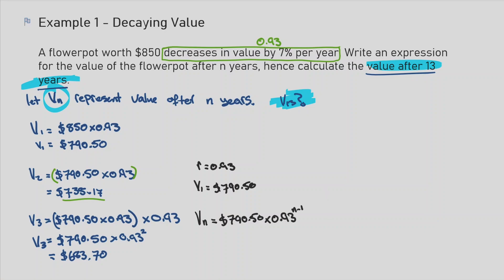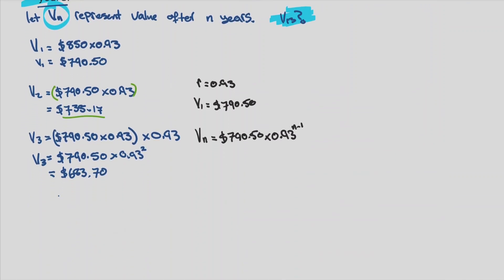So I can use that to then find the 13th term. V₁₃ equals 790.50 multiplied by 0.93 to the power of 12.